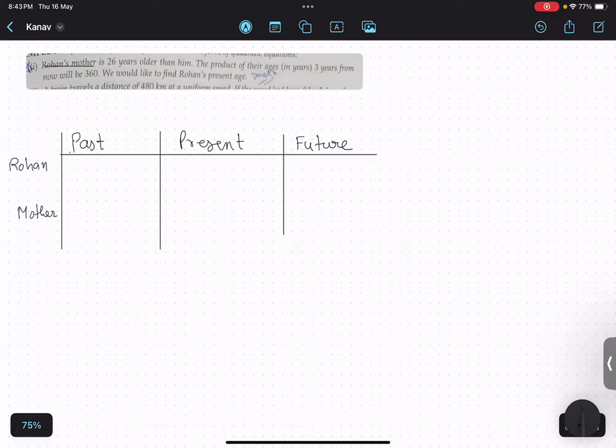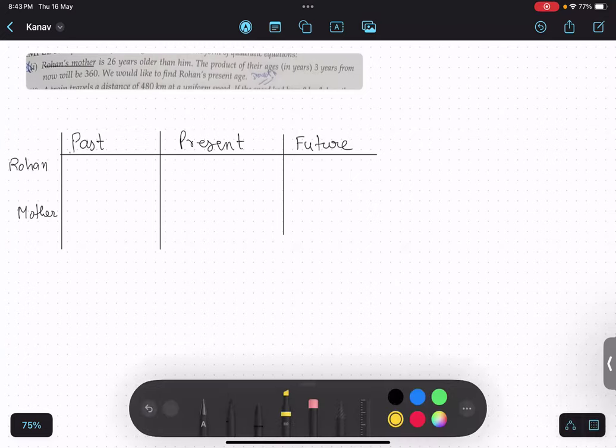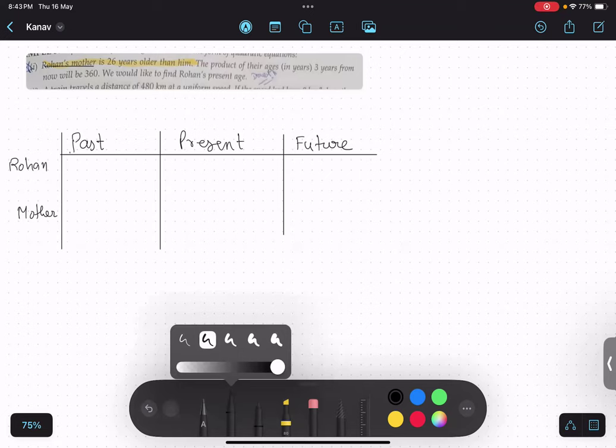Let us see what the question is saying. Rohan's mother is 26 years older than him. So this is one comparison given. If they are not talking about future or past, that means they are talking about present only. Who is getting compared with him? Rohan's mother is getting compared with Rohan. So whom should I take as X? Rohan. Very good.